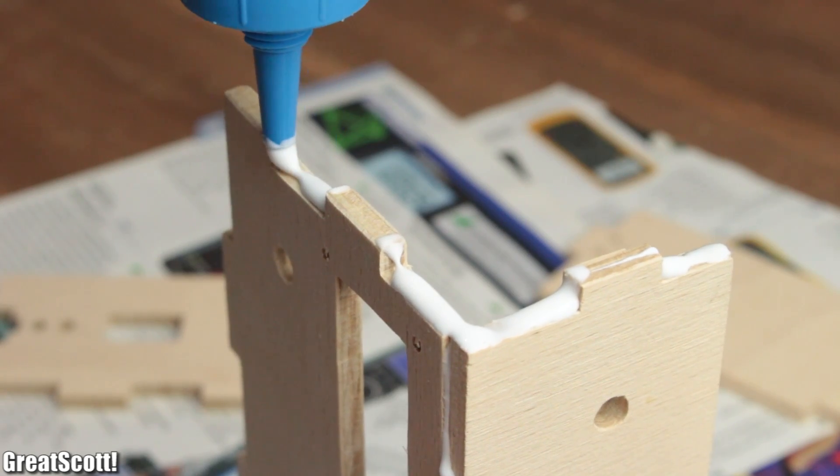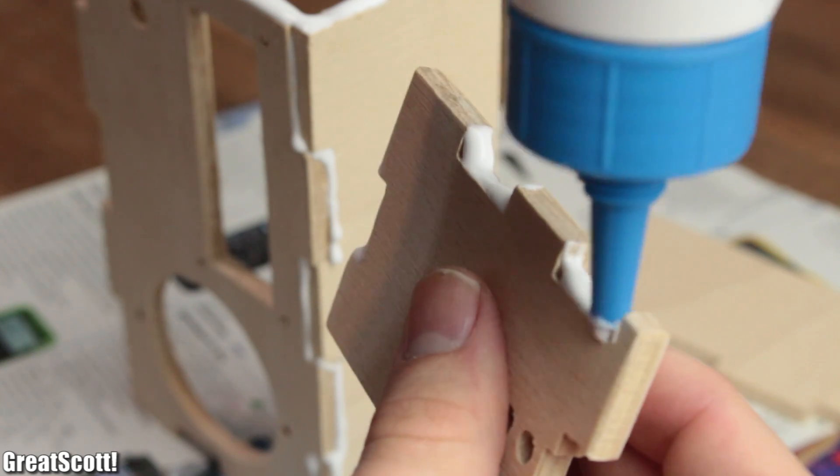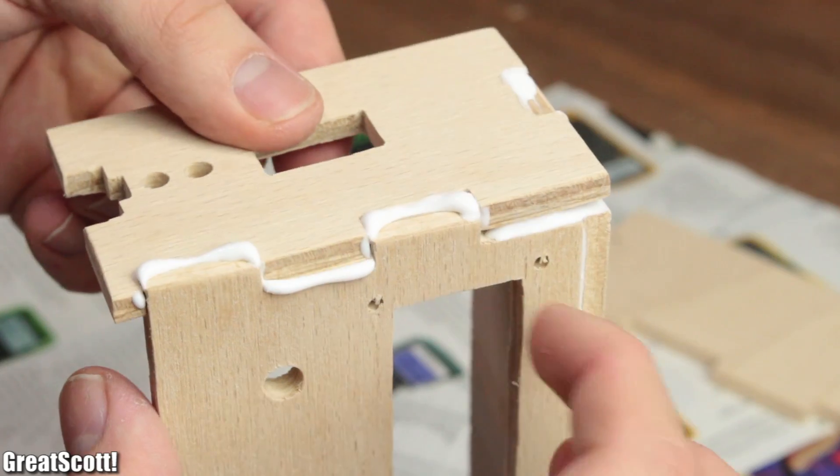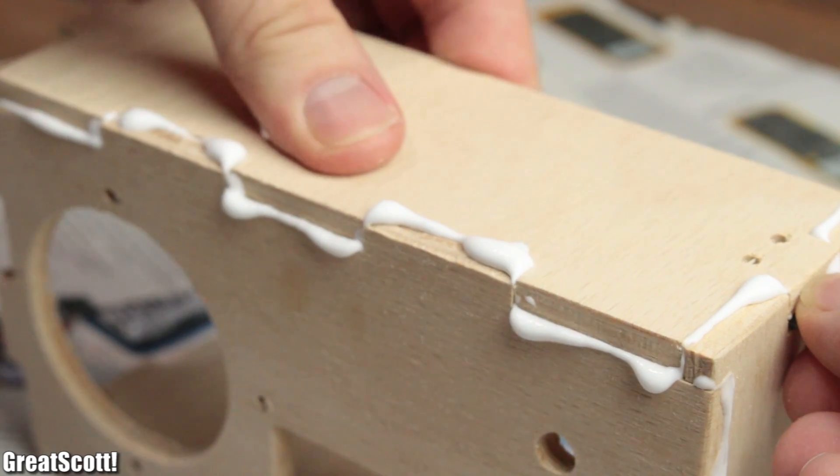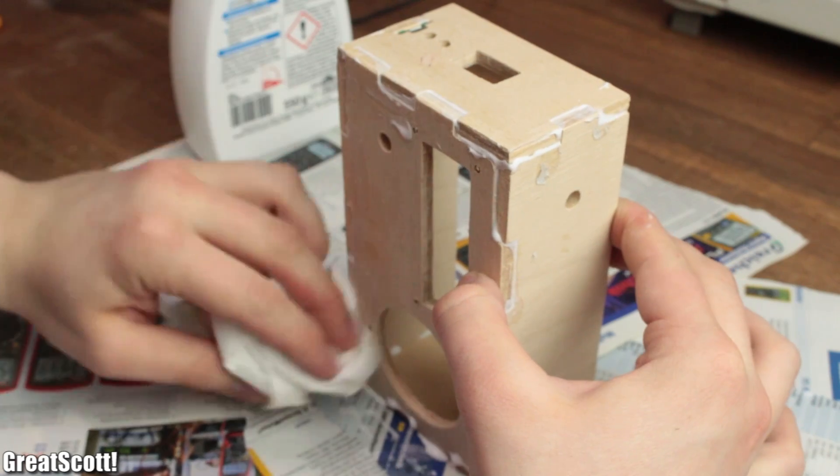Afterwards, I applied waterproof wood glue onto the lower state of the square wave and joined all the pieces together while making sure to always wipe off the squished out glue.